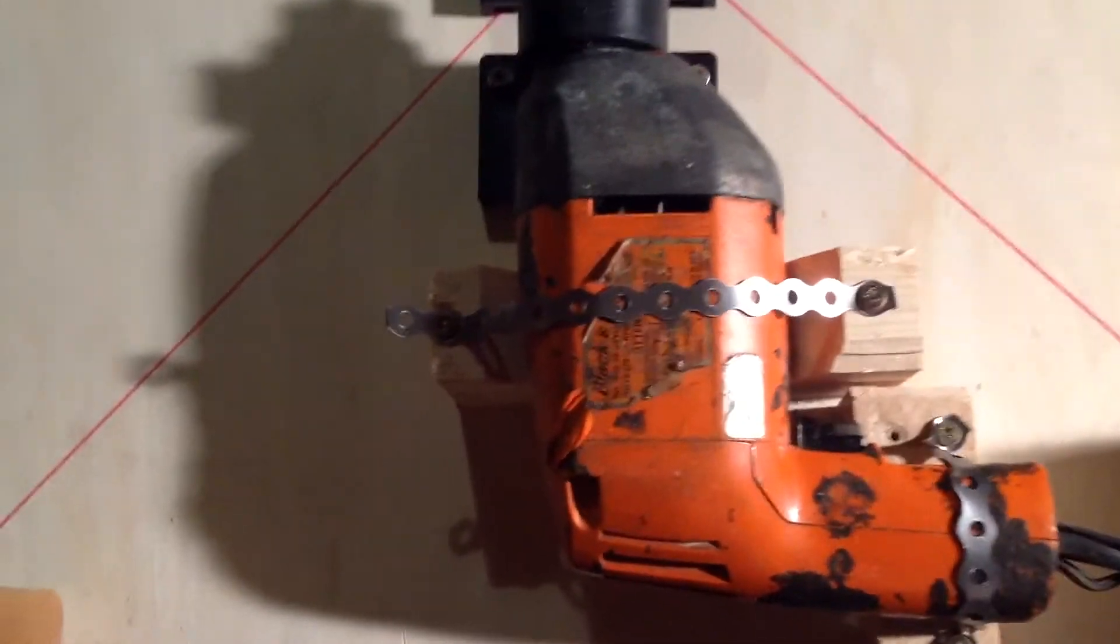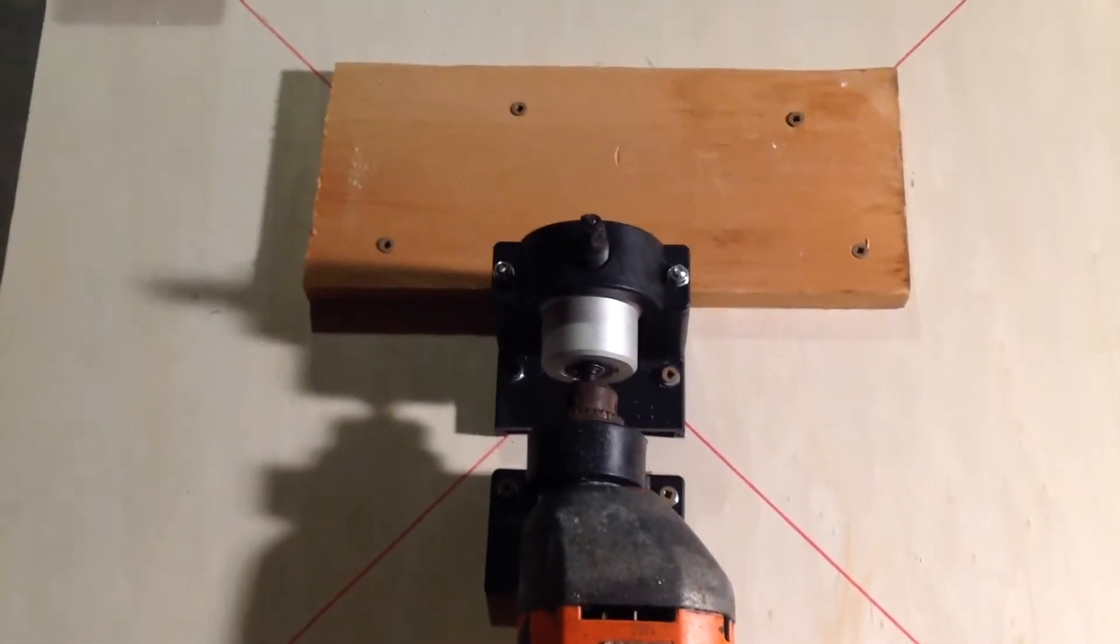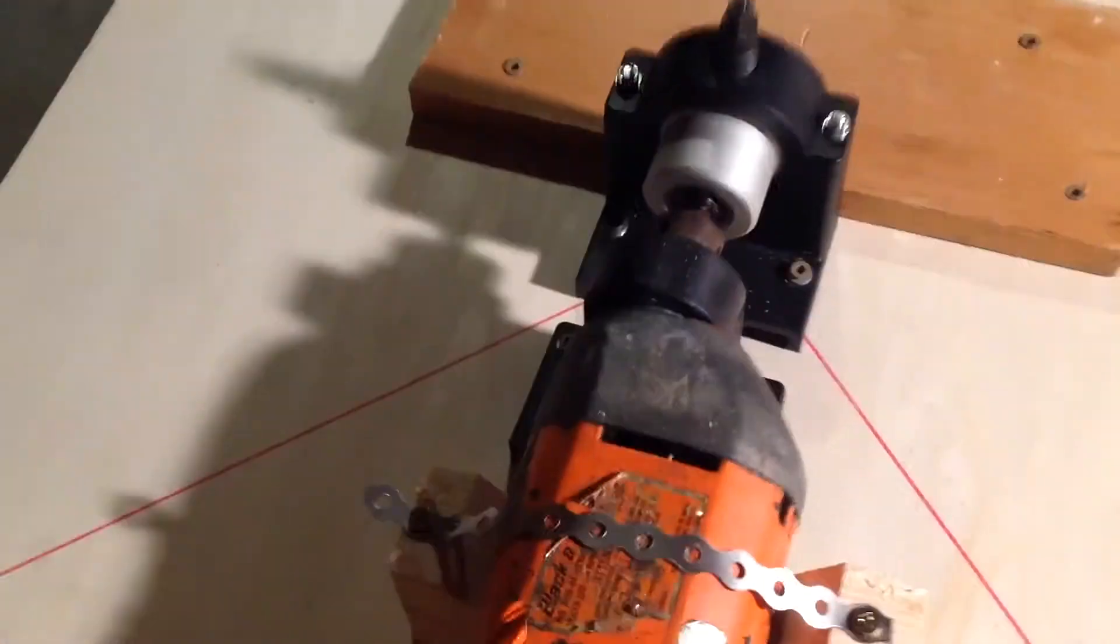I used a couple triangle pieces of wood here to build kind of a wedge to hold the saw, and then I just clamped them down. So why don't we turn it on and see how it looks.